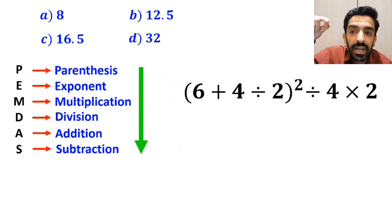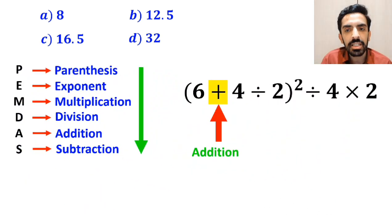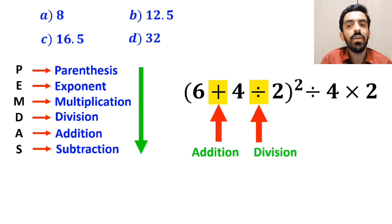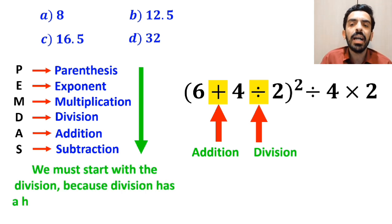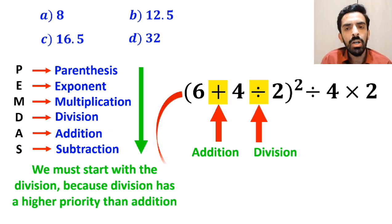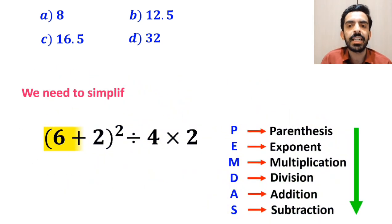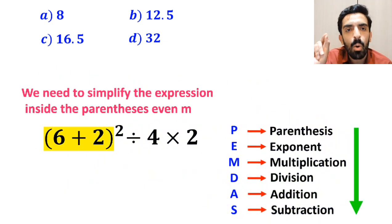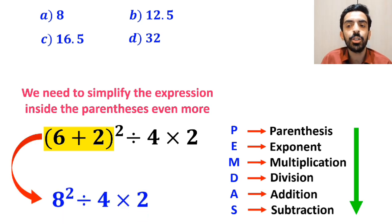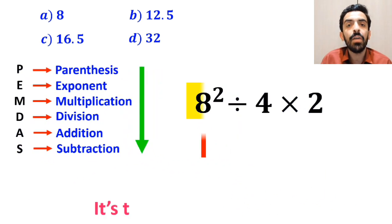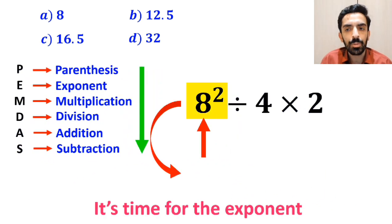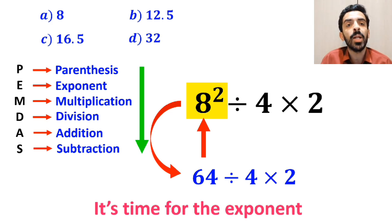As you can see, inside the parentheses we have an addition sign followed by a division sign. We must start with the division, because division has a higher priority than addition. So instead of this expression, we can write (6 + 2)² ÷ 4 × 2. In the next step, we simplify the expression inside the parentheses to get 8² ÷ 4 × 2. Now it's time for the exponent, so we write 64 ÷ 4 × 2.